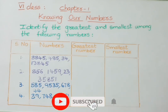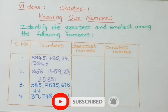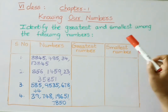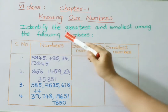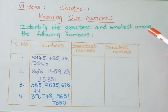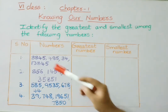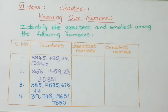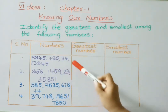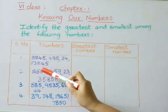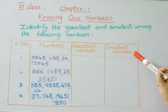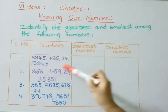Today we are going to learn Chapter 1: Knowing Our Numbers, Exercise 1. Before going to the exercise, we are going to start some example sums. We will be identifying the greatest and smallest among the following numbers. See the first question: the numbers 3,845, 485, 34, and 13,845. We have to find the greatest number and smallest number among these four numbers.